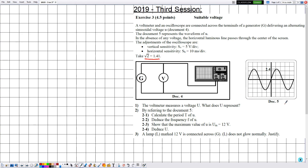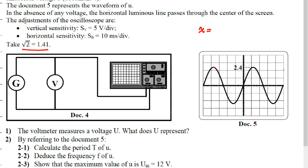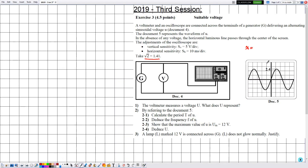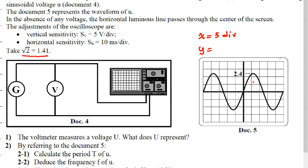The trick in solving such type of exercises is to determine the values of x and y from the screen of the oscilloscope. X represents the number of divisions between two consecutive peaks. Since it's difficult to count directly between peaks, we count from the center. Skipping a point, the number of divisions is 1, 2, 3, 4, 5 — so x equals 5 divisions along the x-axis. As for y, which is the number of divisions for the maximum voltage reached by the wave, it is given as 2.4 divisions.